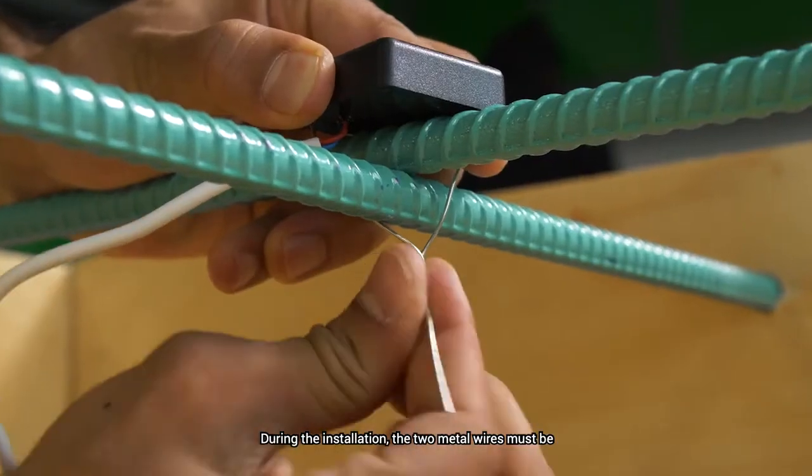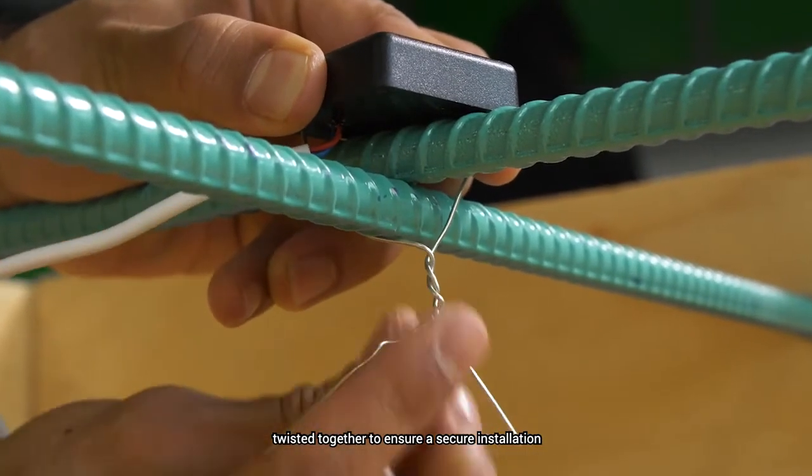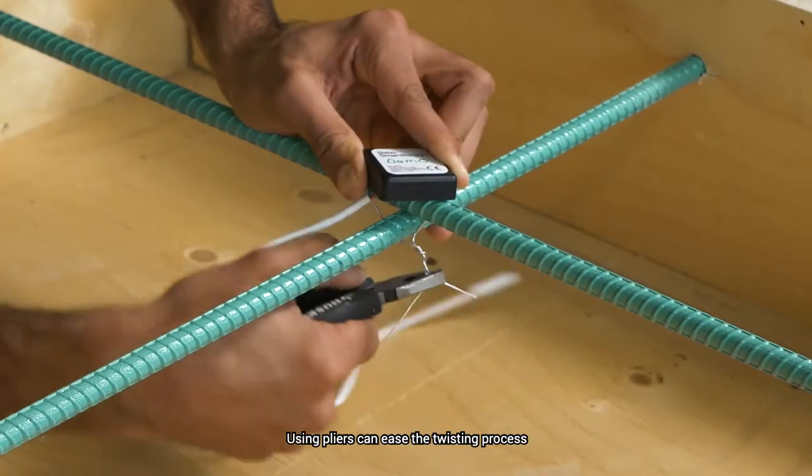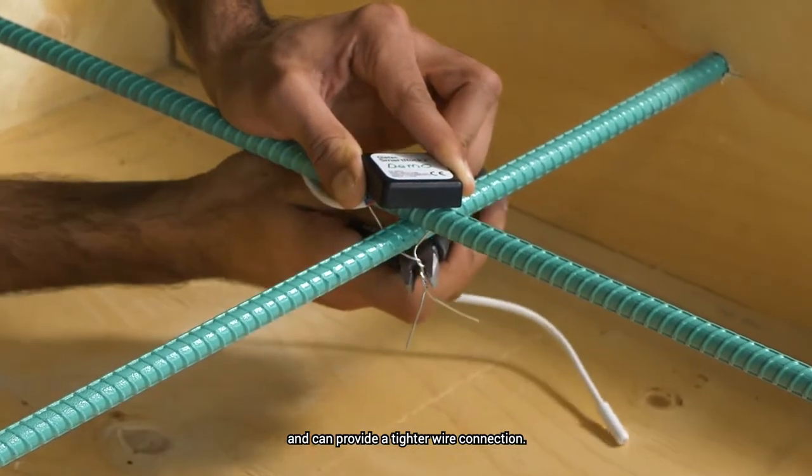During the installation, the two metal wires must be twisted together to ensure a secure installation and strong wire connection to activate the sensor. Using pliers can ease the twisting process and can provide a tighter wire connection.